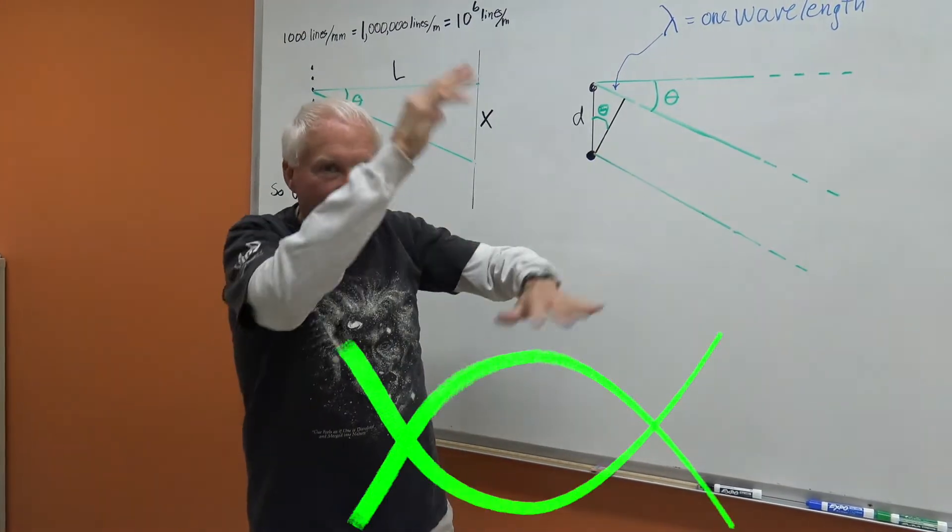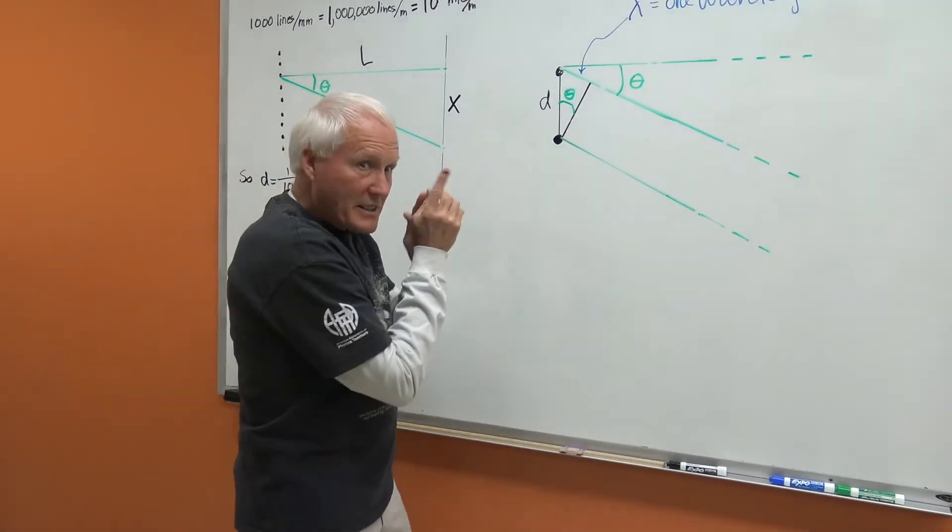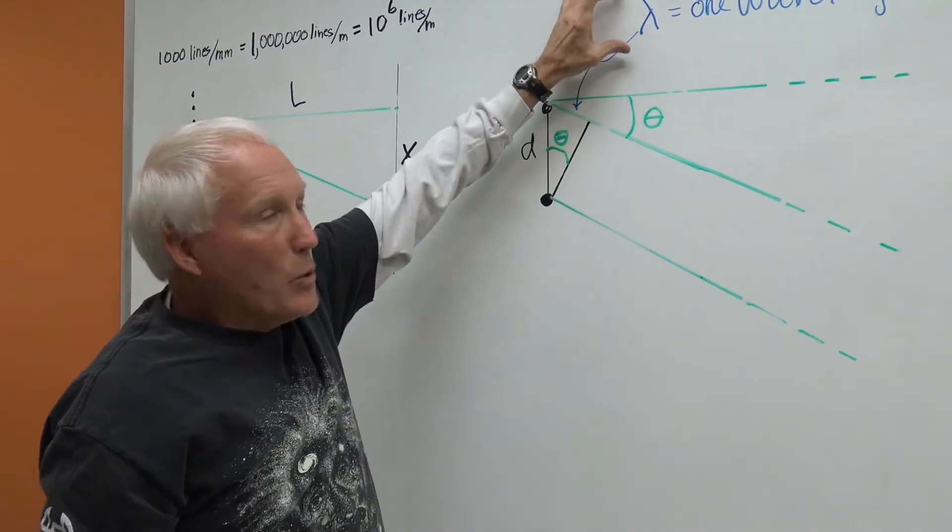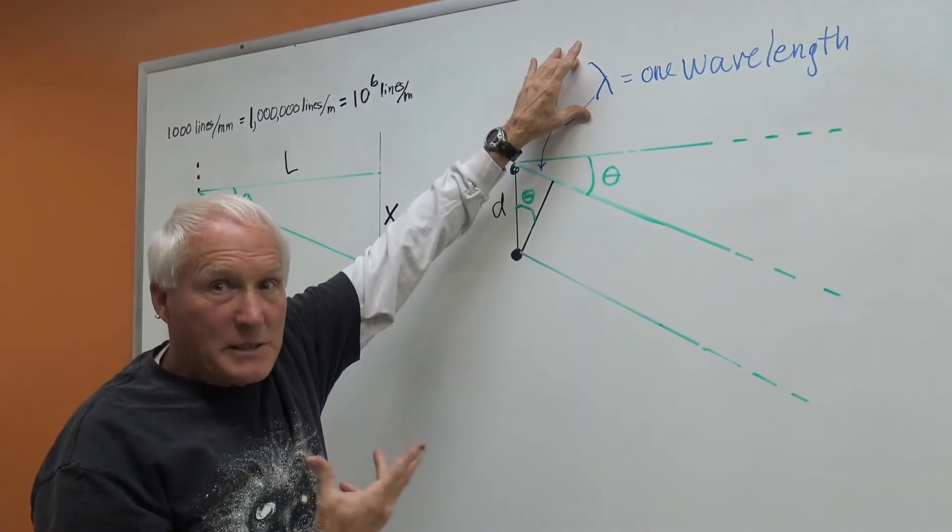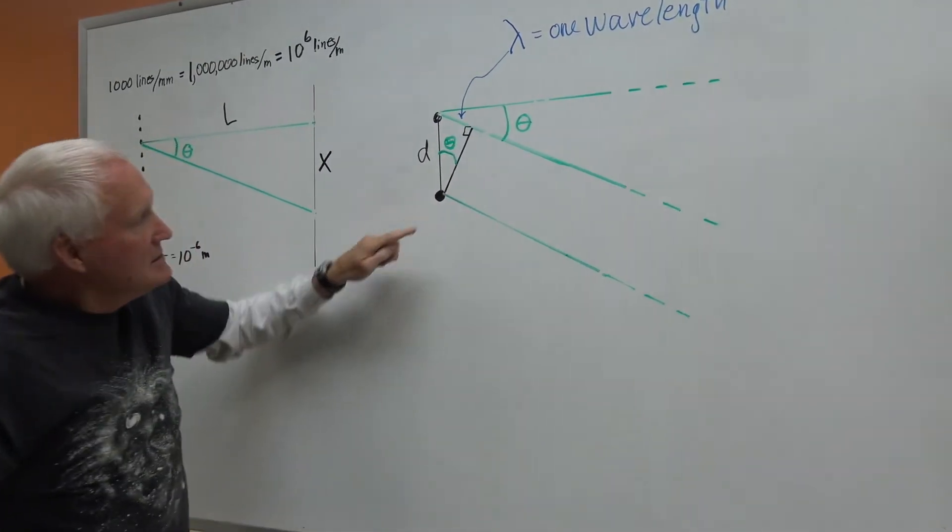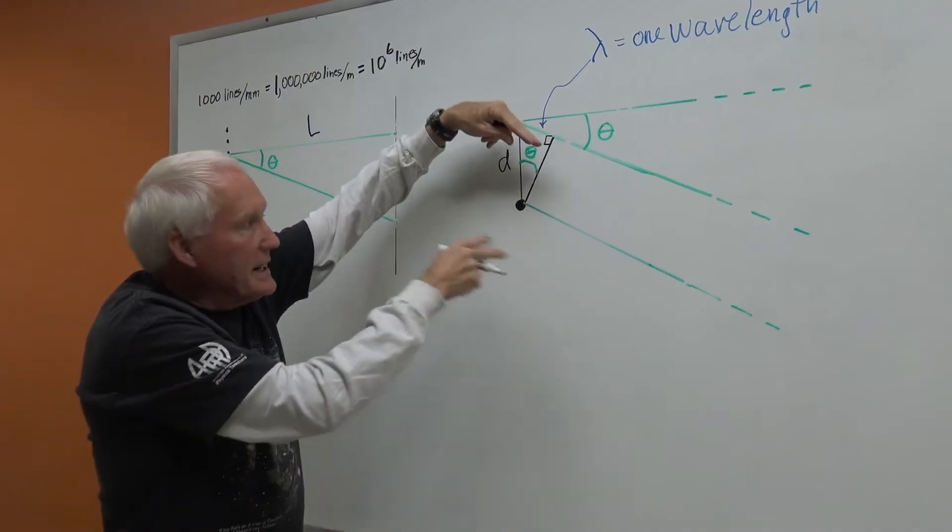But in between, there's enough differences, enough different waves that they cancel out. So here's the key, the extra distance. We call it lambda, which is a symbol for wavelength. This little line here is perpendicular between these two lights, light waves, light lines.